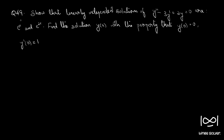Question 49. Show that the linearly independent solutions of y'' - 3y' + 2y = 0 are e^x and e^(2x). Find the solution y(x) with the property that y(0) = 0 and y'(0) = 1. We are given a differential equation and two functions. We have to show that these two functions are independent solutions to the differential equation, and find a general solution which satisfies the initial value conditions.